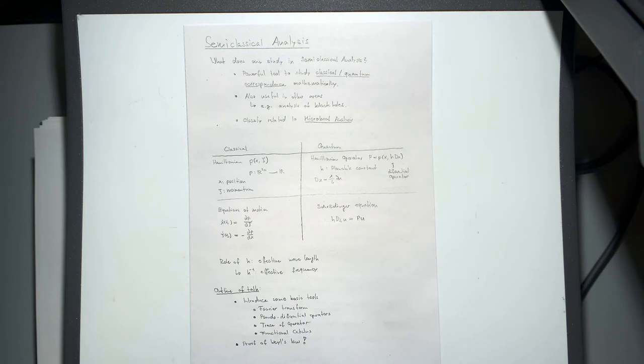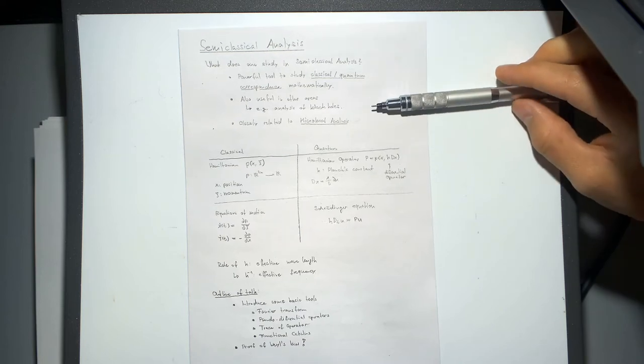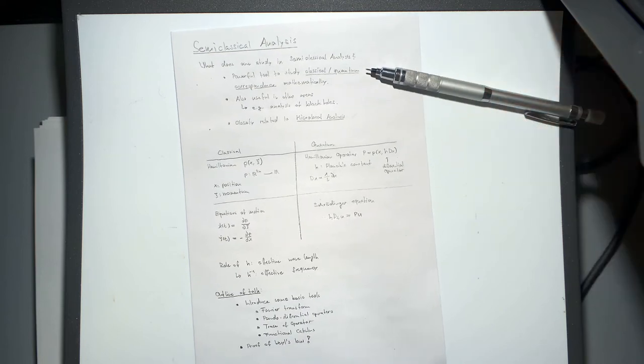With semi-classical analysis, we want a tool to mathematically rigorously show that this straight-line approximation is the correct approximation for effects that are actually quantum but that we also see in our classical world. It's a powerful tool to mathematically analyze the correspondence between classical and quantum mechanics.